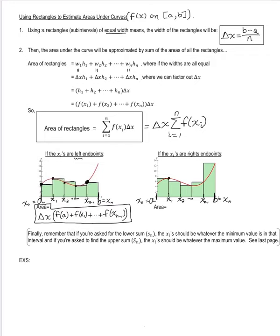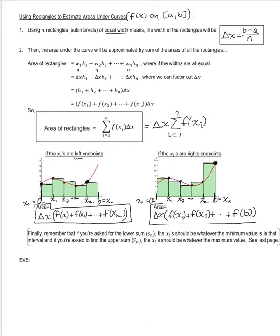If you're doing right endpoints, you again factor out the common width in front. For your first height, it's not f of a — you start one width in at f of x sub 1, then count up by the width to x2 and so on. With right endpoints, you go all the way to f of b, or x sub n. A good check: the number of terms added inside your parentheses should equal your number of rectangles.